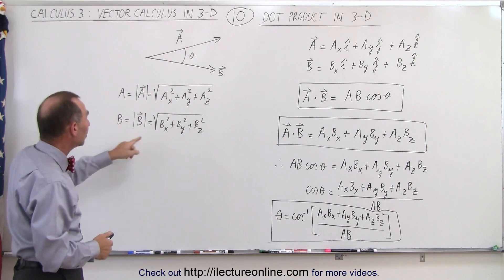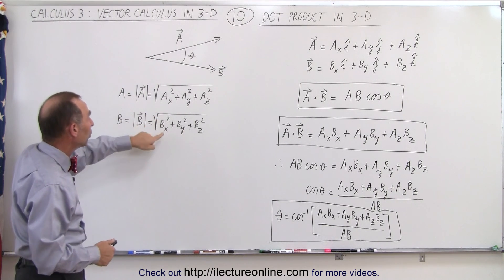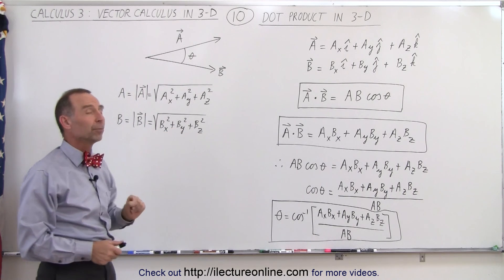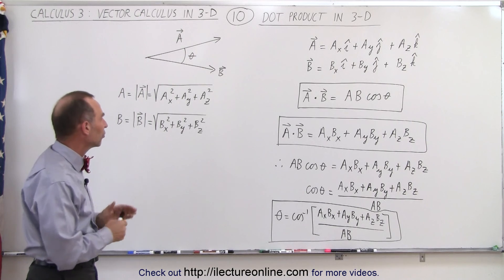We can do the same thing for the B vector. It's the square root of the sum of the x component squared plus the y component squared plus the z component squared. So that gives us the magnitude of the two vectors. We multiply those two magnitudes together, and we multiply that times the cosine of the angle between them, and that gives us the dot product.